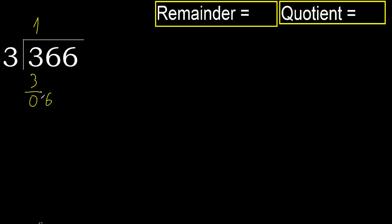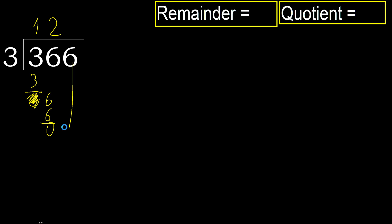Next, bring down the 6. 3 multiplied by 3 is 9 — that is greater. Multiplied by 2 is 6 — not greater. Subtract.